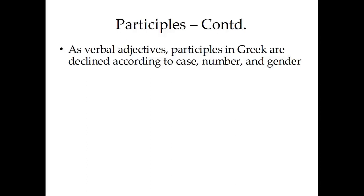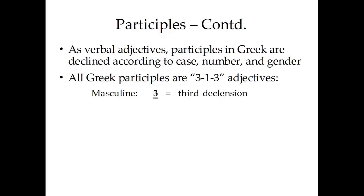As verbal adjectives, participles in Greek are declined according to case, number, and gender. We don't have to do much in the way of declension when it comes to English participles. All Greek participles are 3-1-3 adjectives. In the masculine, the endings look like third declension endings. In the feminine, they look like first declension endings. And in the neuter, they look like third declension endings.